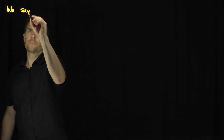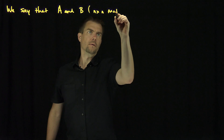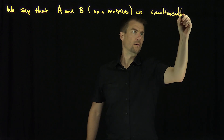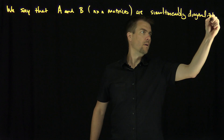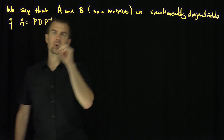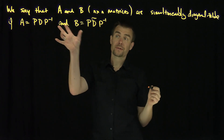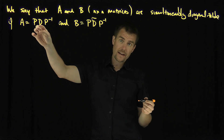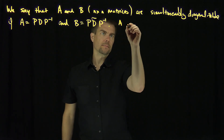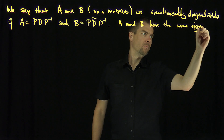We say that A and B, which are n by n matrices, are simultaneously diagonalizable if A equals PDP inverse and B equals PD-tilde P inverse, where these P's are the same matrix. In other words, P is the matrix of eigenvectors of A, and P is also the matrix of eigenvectors of B. So A and B have the same eigenvectors up to scaling.